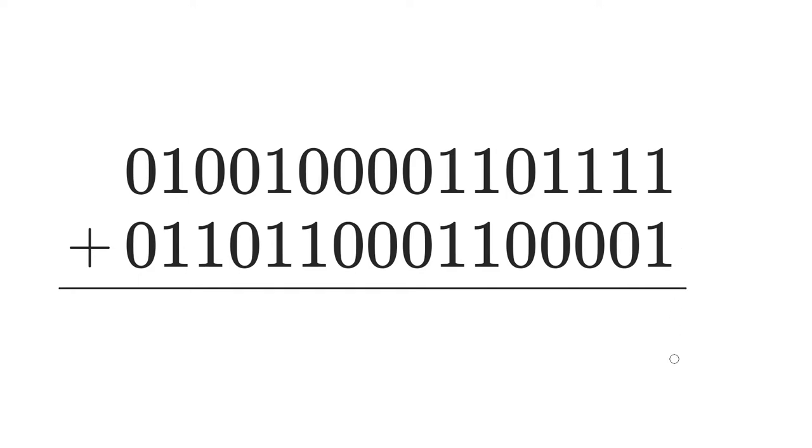1 plus 1 is 2. We know that, but what does that look like in binary? Let's do it up here. 1 plus 1 equals 1, 0. That's a 1 in the 2's place and a 0 in the 1's place, which gives us the decimal 2.